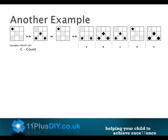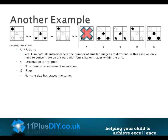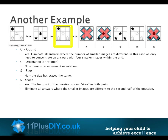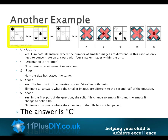Another example. Count: yes — eliminate all answers where the number of smaller images differs. In this case we only need answers with four smaller images within the grid. Orientation: no, there is no movement or rotation. Size: no, the size has stayed the same. Shape: yes — the first part of the question shows stars in both parts; eliminate all answers where the smaller images are different. Shade: yes — in the first part of the question the solid fills change to empty fills and the empty fills change to solid fills. Eliminate all answers where this fill swap has not happened. The answer is C.